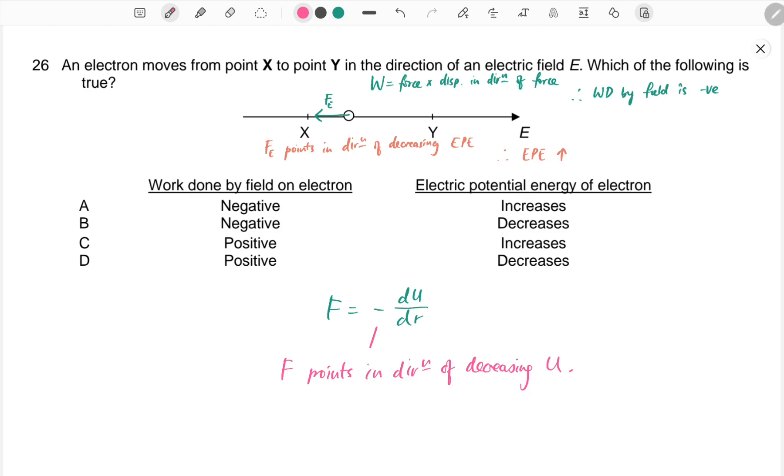Let's recall the formula F = -dU/dr. The minus sign refers to the fact that the force points in the direction of decreasing U.